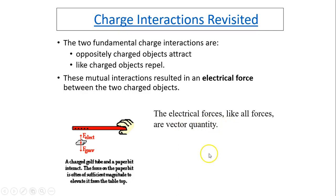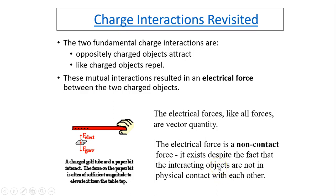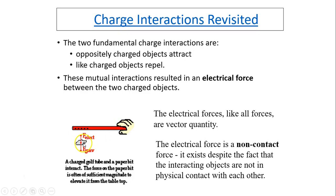The electric force, like all forces, is a vector quantity — that means it has direction. So when we add two forces together we have to consider the direction. Electric force is a non-contact force; it exists despite the fact that interacting objects are not in physical contact with each other. Both gravity and the electric force are non-contact forces. The foil is not touching the earth but there is a force of gravity acting on it, and the foil is not touching the charged rod but there is still an electric force acting on it.